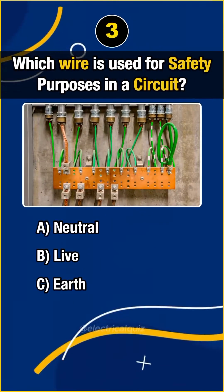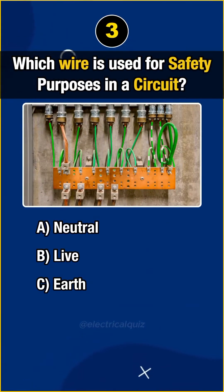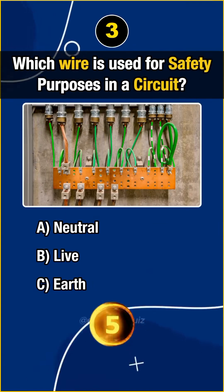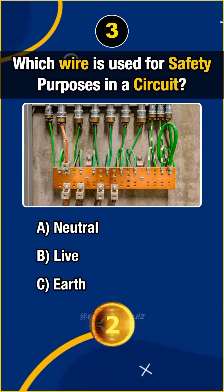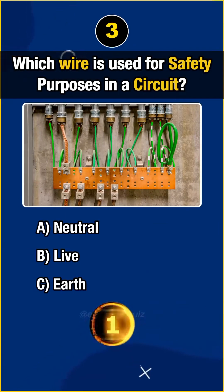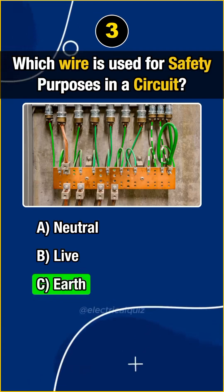Question 3: Which wire is used for safety purposes in a circuit? Answer C — Earth.